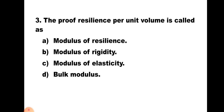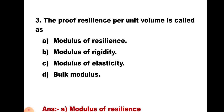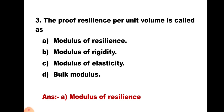Question number 3: The proof resilience per unit volume is known as — A. Modulus of resilience, B. Modulus of rigidity, C. Modulus of elasticity, and D. Bulk modulus. This is the definition of modulus of resilience. Hence, the correct answer is A. Modulus of resilience.